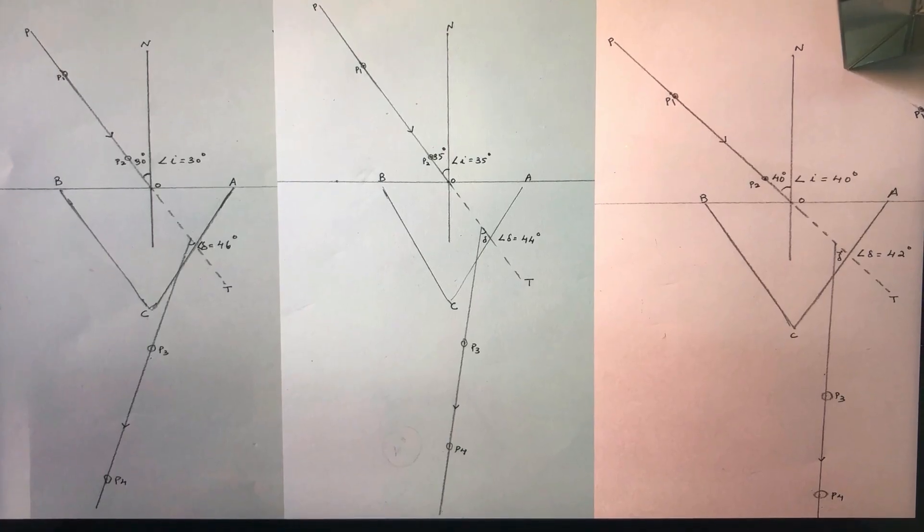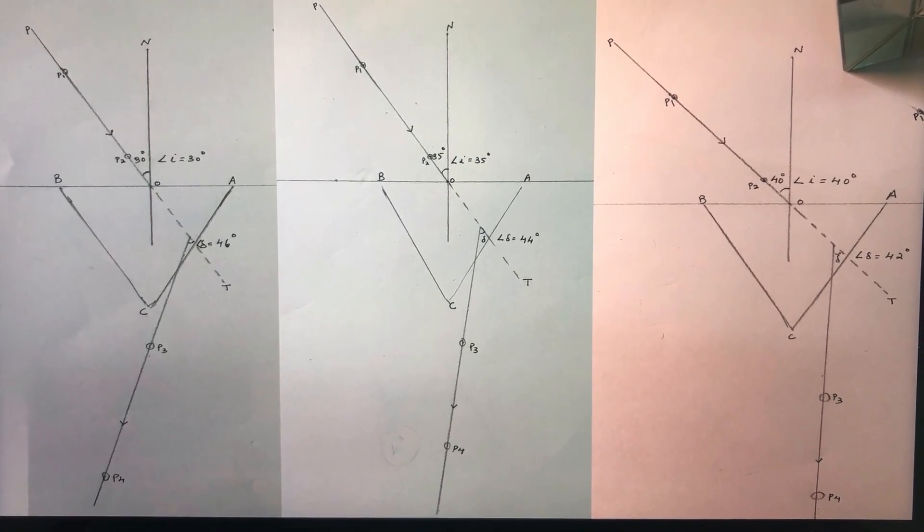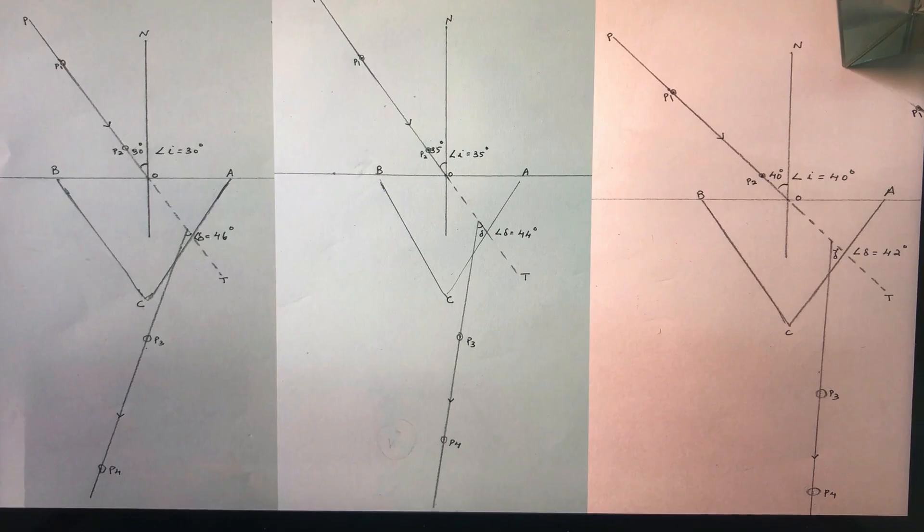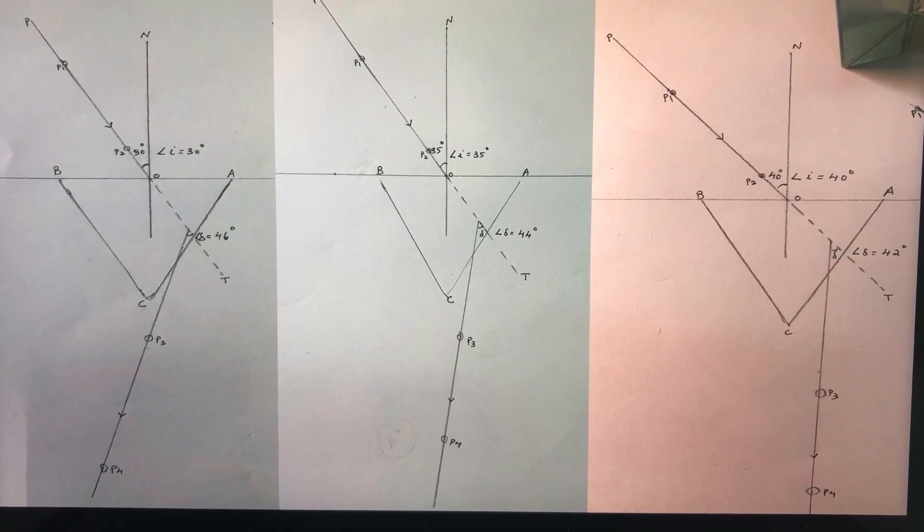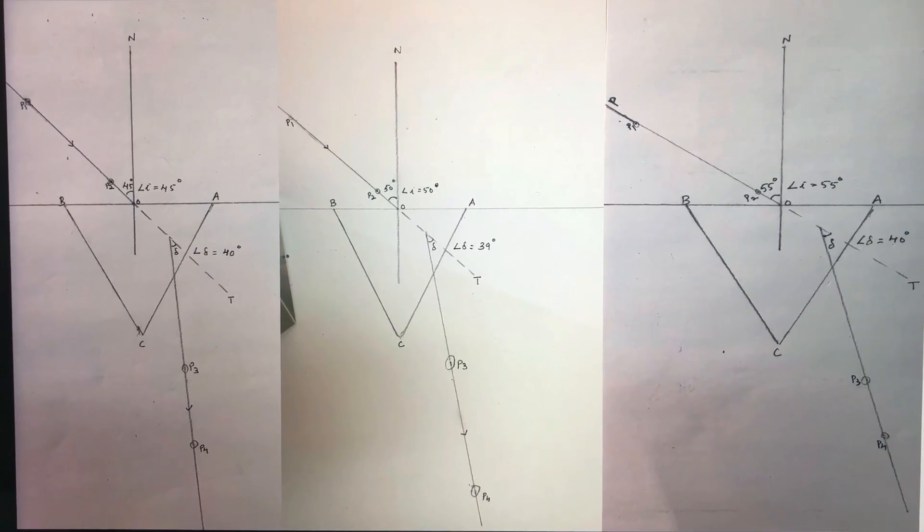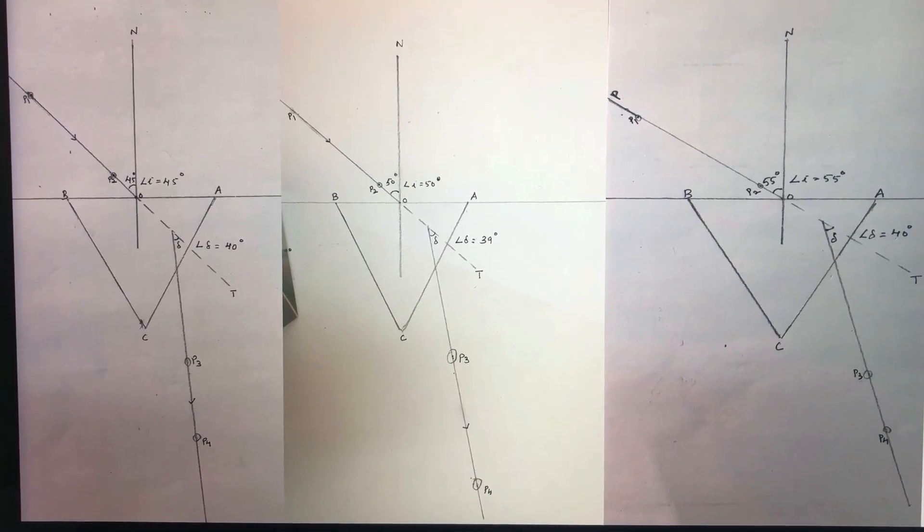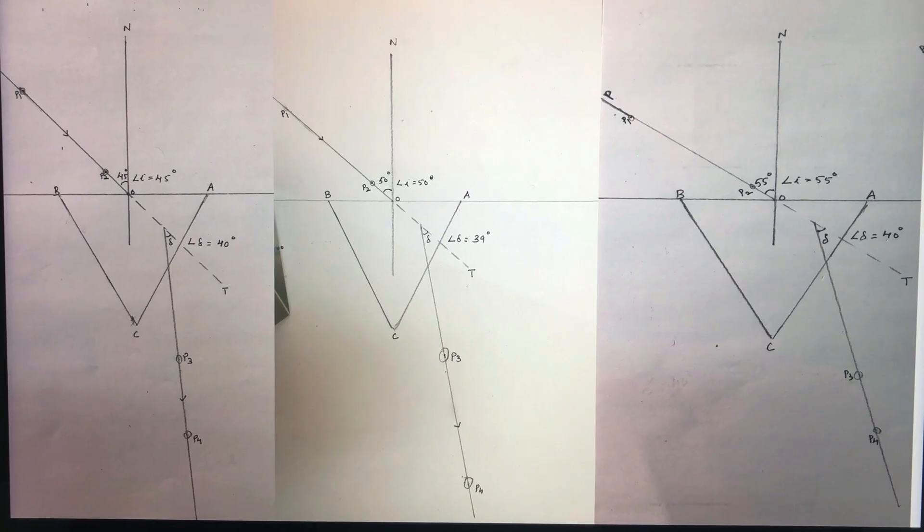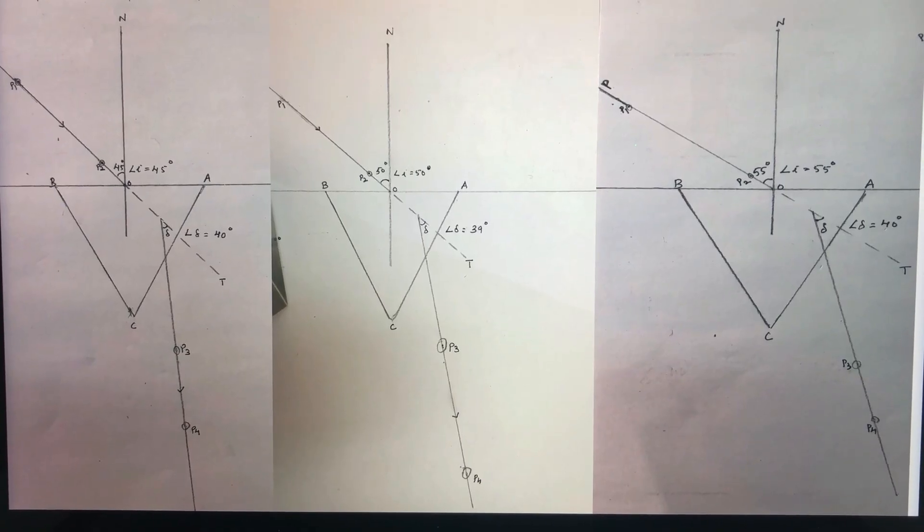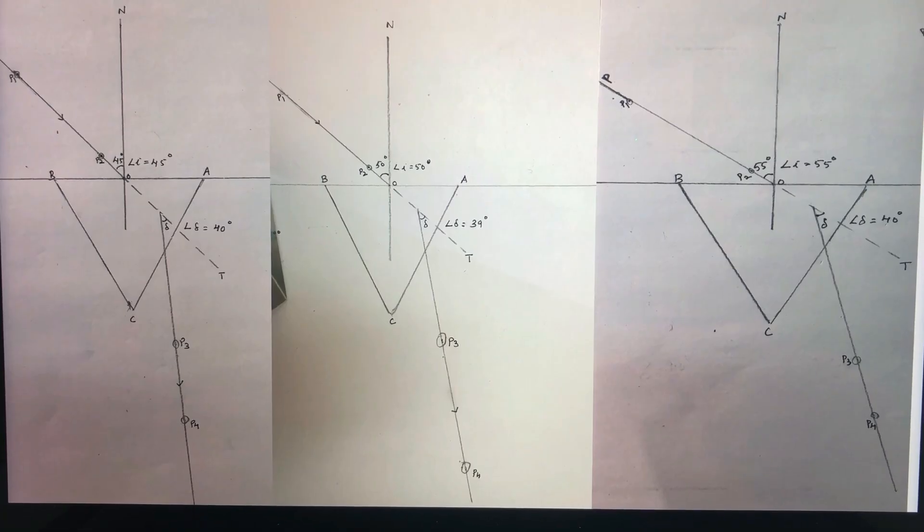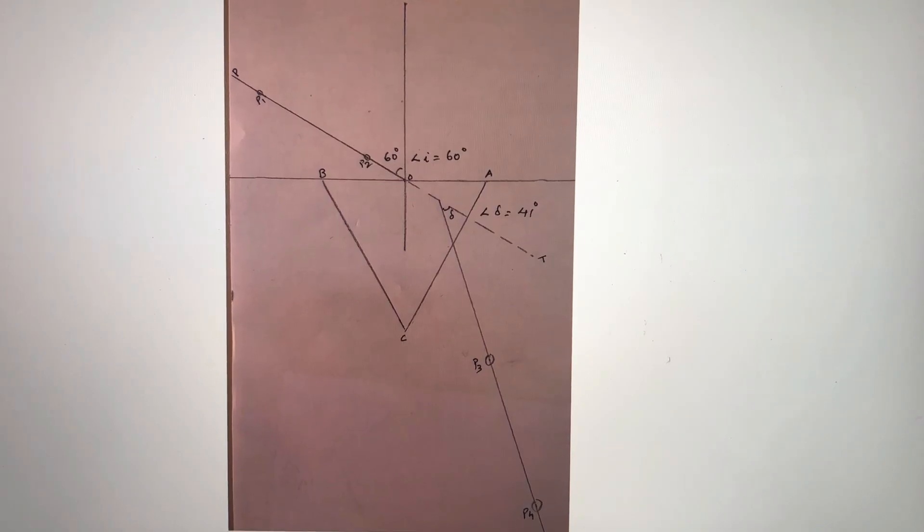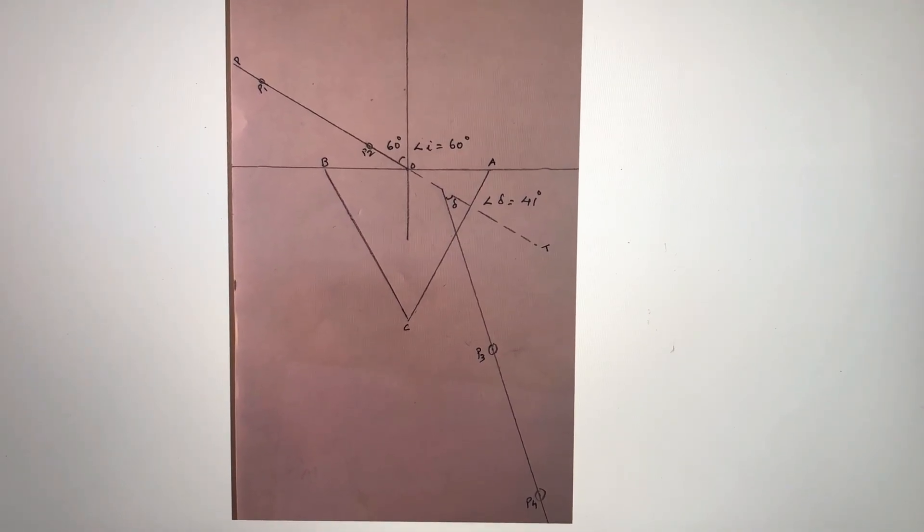The first diagram shows for an angle of incidence of 30 degree, the angle of deviation is 46 degree. For second figure, the angle of incidence is 35 degree, the angle of deviation is 44 degree. For the third figure, the angle of incidence is 40 degree, the angle of deviation is 42 degree. For the fourth figure, the angle of incidence is 45 degree, the angle of deviation is 40 degree. For the fifth, the angle of incidence is 50 degree, the angle of deviation is 39 degree. For the 6th figure, the angle of incidence is 55 degree, the angle of deviation is 40 degree. For the 7th figure, the angle of incidence is equal to 60 degree, the angle of deviation is 41 degree.